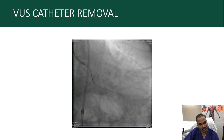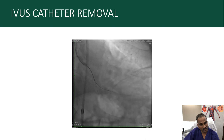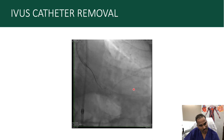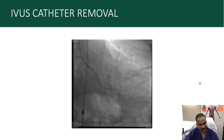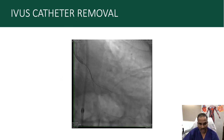By this time, the patient started developing low blood pressure and ischemia, because the 8 French catheter was sitting in a diseased ostial LM/CIA. We had to quickly change our plan and pull out the IVUS catheter. To pull out the IVUS catheter using the slipstream technique, you pull the wire back and advance it again — this allows you to remove the IVUS catheter without moving the wire or the Crusade catheter.